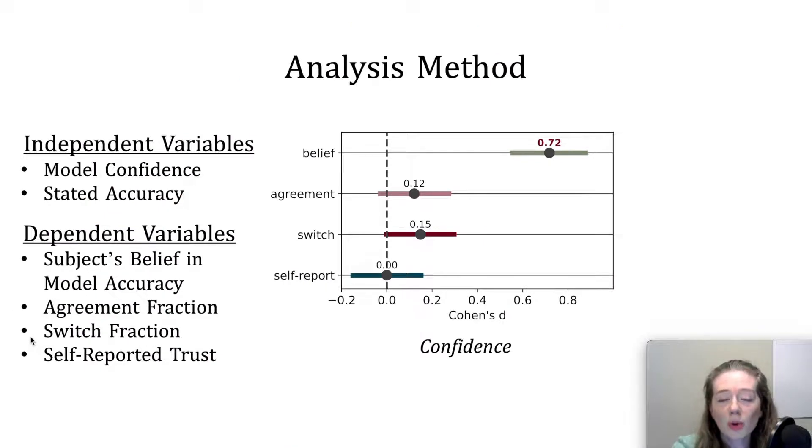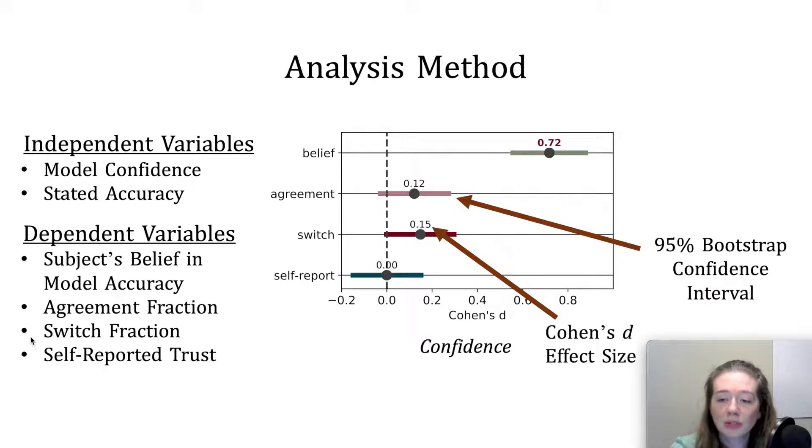We start with the question of how users' trust in machine learning is impacted by the model's stated accuracy and its confidence before the model's accuracy is observed in practice. We considered the model's stated accuracy and confidence level as our independent variables, and the four trust measures detailed in the previous slide as our dependent variables. To analyze the effects of our independent variables on the four trust measures, we calculated Cohen's d effect sizes along with 95% bootstrap confidence intervals for each trust measure between subjects assigned to different levels of a given independent variable.